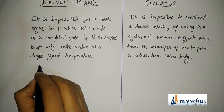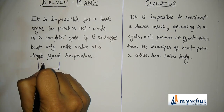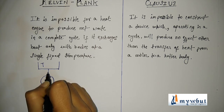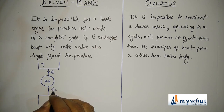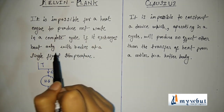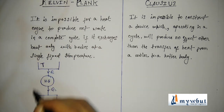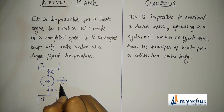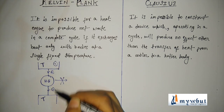Let me show you very briefly. As in the previous diagram, if you draw a diagram of a heat engine with temperature T, let this be the heat engine, let Q1 be the heat input and Q2 be the heat output. As the statement states — with a single fixed temperature — if this temperature is T and we assume the temperature of the sink also to be T, then there will be no net work done.